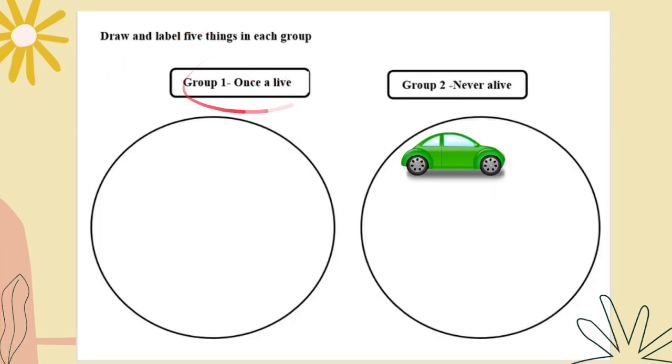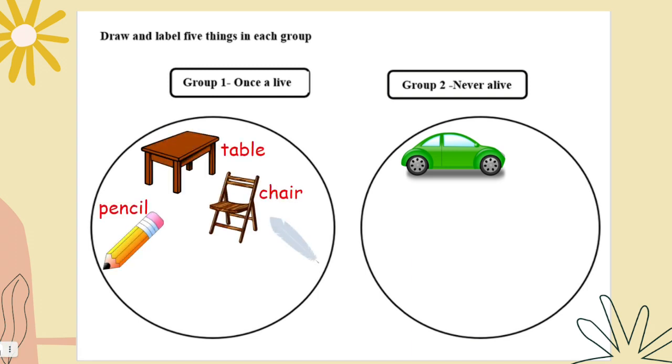Now draw and label five things in each group. Group one, once alive, and group two, never alive. For once alive, remember once living things are objects that used to be alive but now are not. Examples are table, chair, pencil, feather, dry leaves.